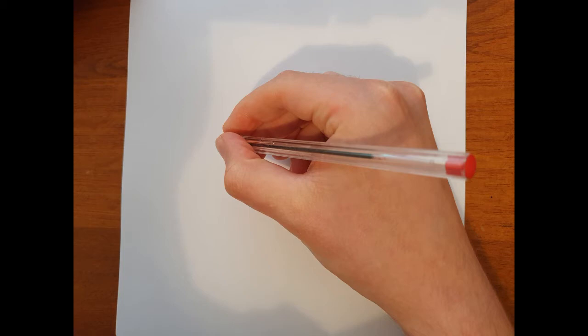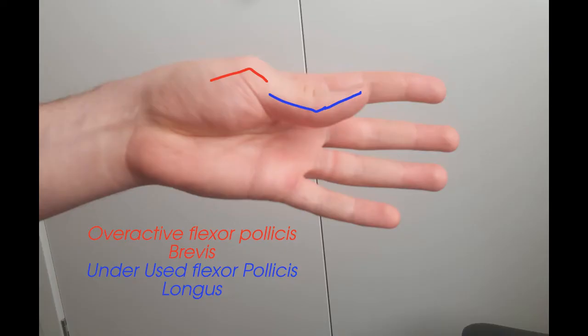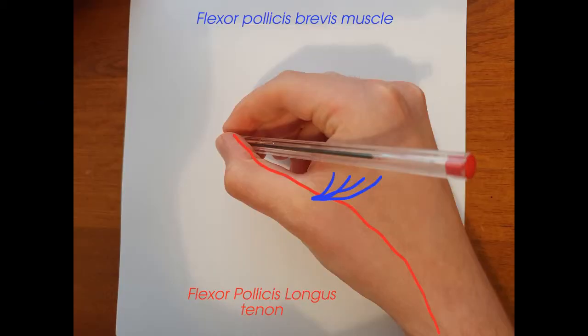The first two rely too much on one particular muscle called flexor pollicis brevis. And that muscle is doing all the work trying to hold your pen that way. The better position relies on another thumb flexing muscle in conjunction with brevis called flexor pollicis longus. And this muscle connects all the way back in your forearm.